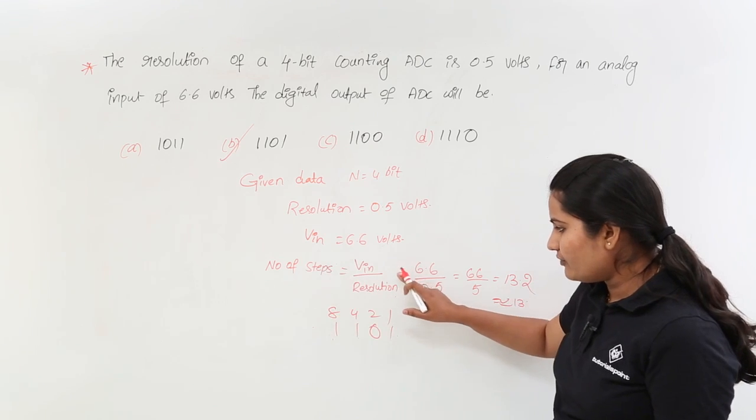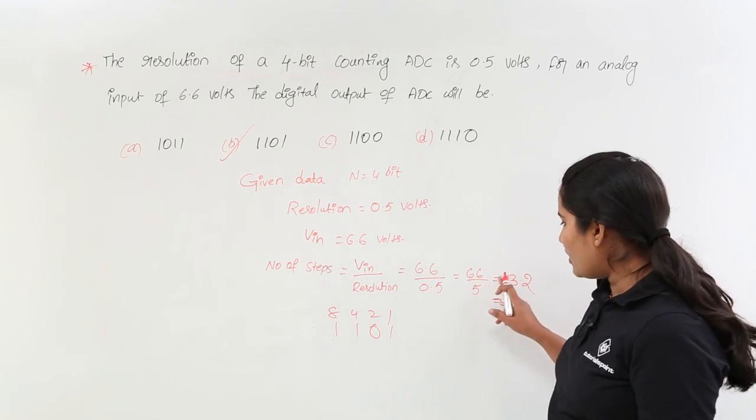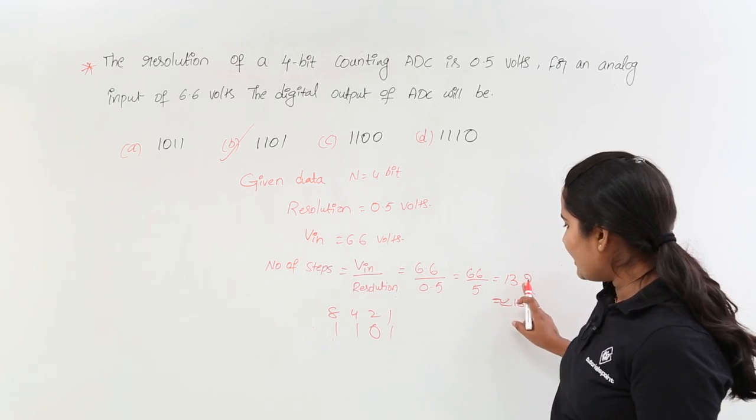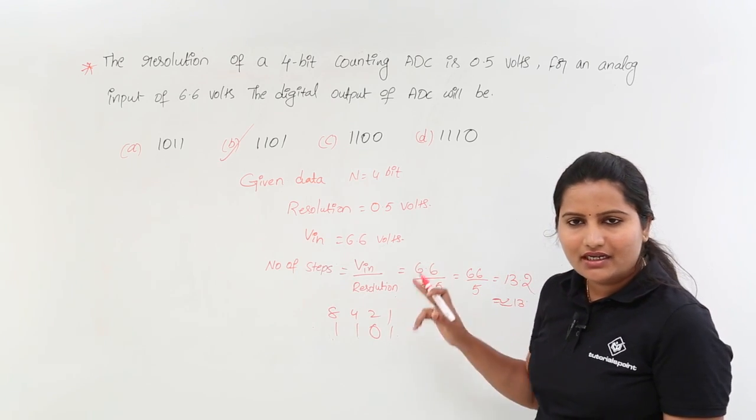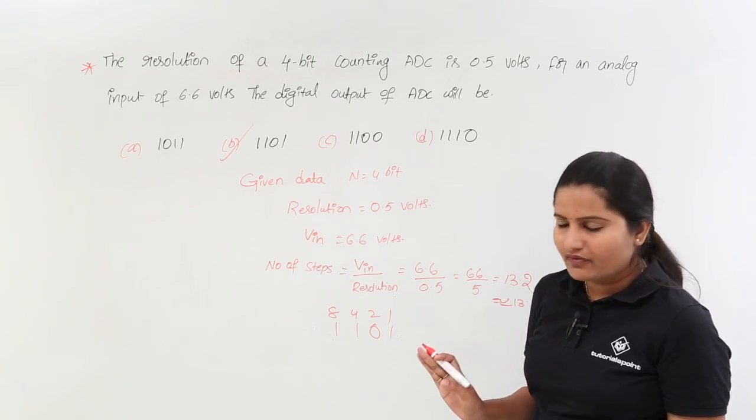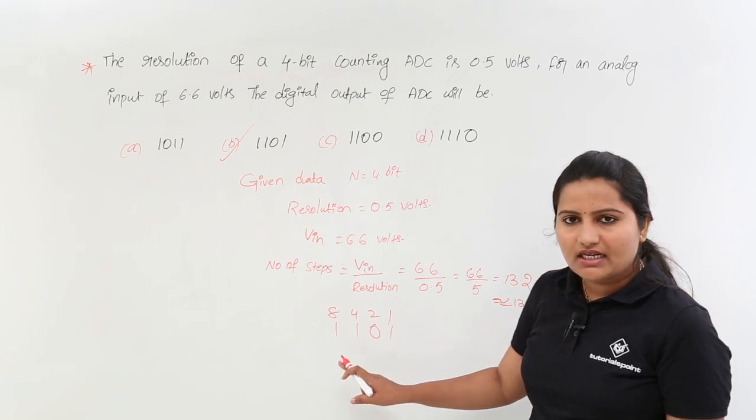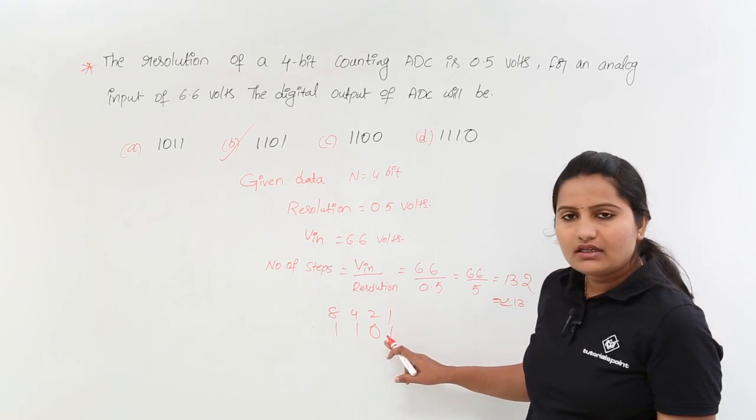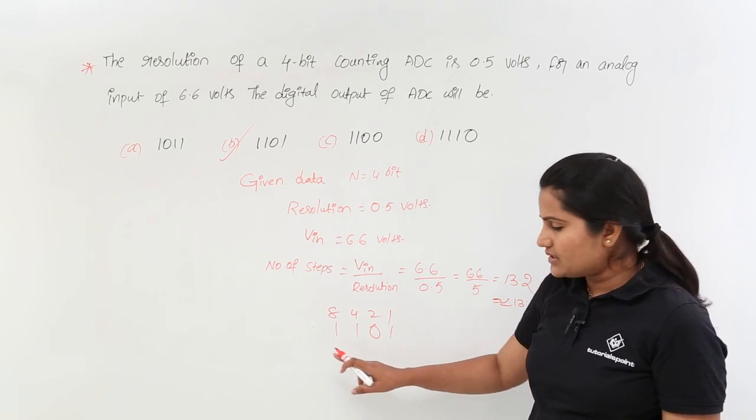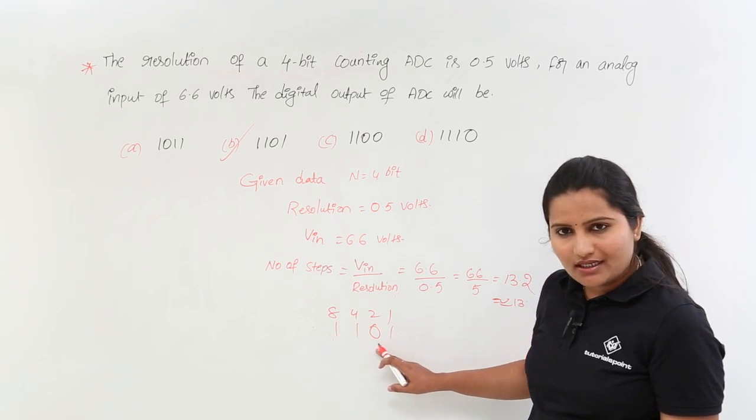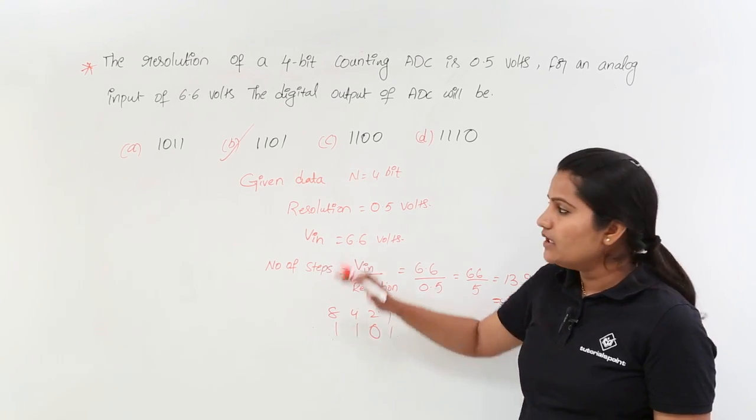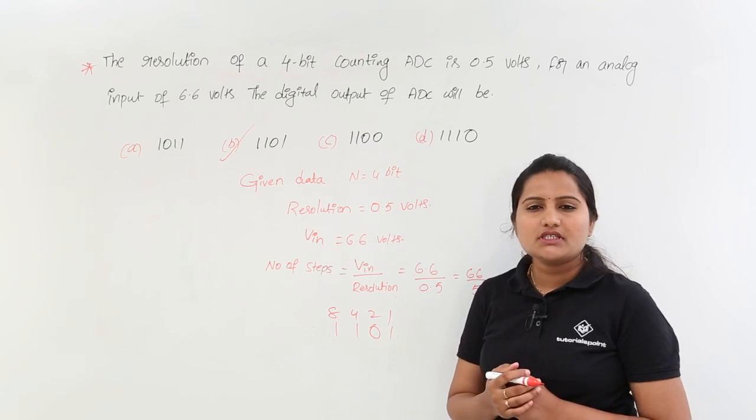Number of steps is equivalent to Vin by resolution. I took Vin by resolution, I got 13.2, I truncated that .2 because that is less than 5. Nearly the value is 13. 13 equivalent in digital is 1101—that is why B is your option for this type of problem.